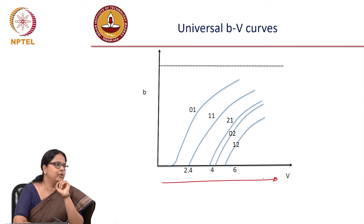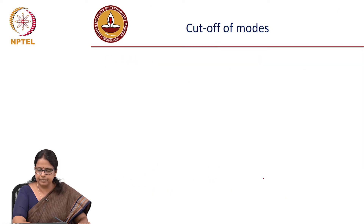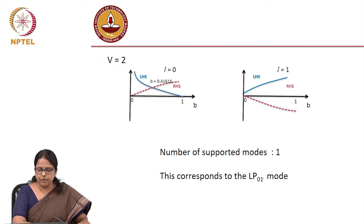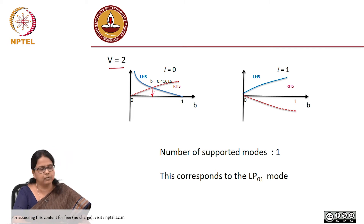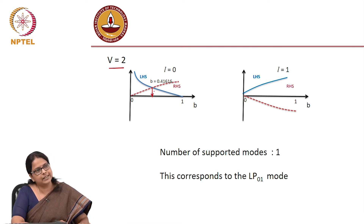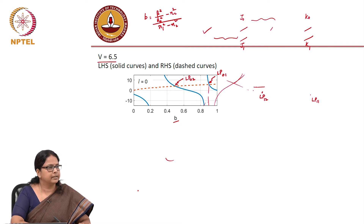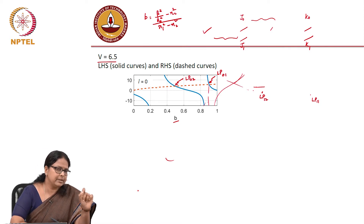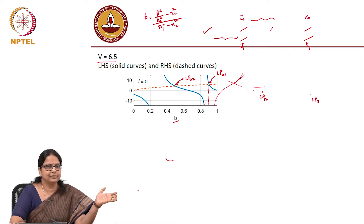Would the B value be the same for the same mode in all cases? For the fundamental mode, I got for V equal to 2 a certain value of B, which was 0.416. When I did this for V equal to 6.5, did I get the same value of B? The B value for the same mode — meaning the propagation constant of the same mode — is different when your V number is different. In other words, the propagation constant of the mode for a given fiber is different when the wavelength is different, because wavelength changes, V number changes, and propagation constant of the mode changes.